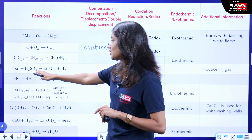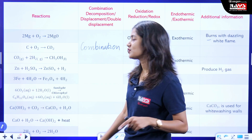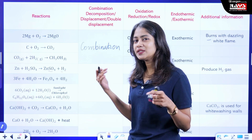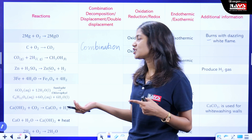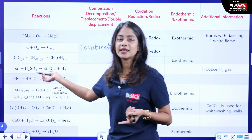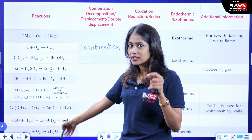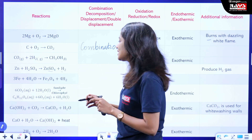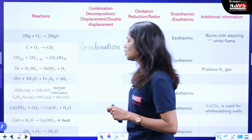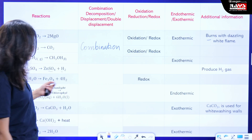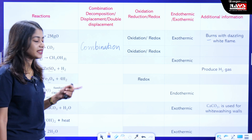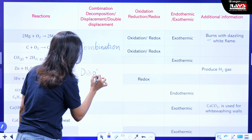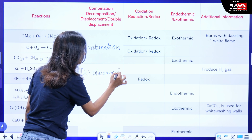The next one is zinc reacts with H₂SO₄ — that is, a metal reacts with acid to form a salt and also produces hydrogen gas. Metal reacts with acids to produce hydrogen gas. Next, iron reacts with steam. Note that iron will not react with cold water or hot water; it only reacts with steam to form iron oxide. Displacement takes place — hydrogen is displaced — so this is an example of a displacement reaction.